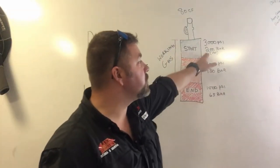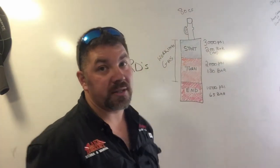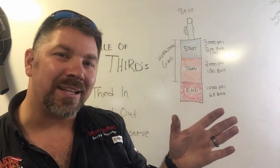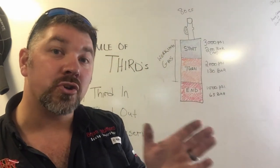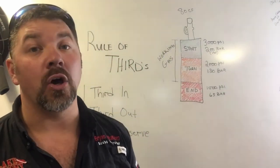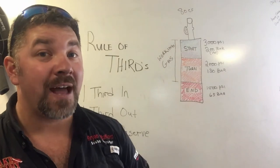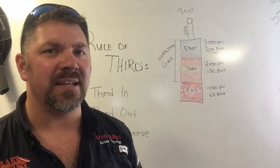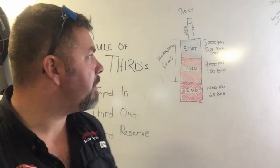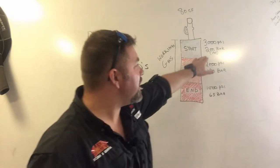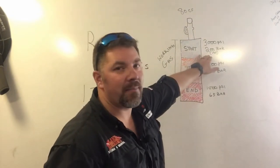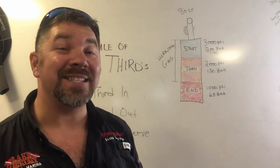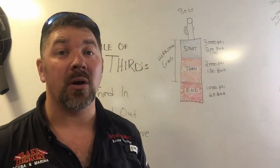For metric, we're going to use a 200 bar cylinder. I'm going to shorten that down to 195 bar for easier math — no decimal points to worry about. If I take 195 bar and divide it by three, that gives me 65 bar increments to work with.